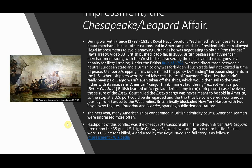The British finally blockaded New York Harbor with two Royal Navy frigates, the Cambrian and the Leander, sparking public demonstrations. The next year, many American ships were condemned in British admiralty courts — meaning the courts ruled the seizures were acceptable under British law — and American seamen were impressed more often.